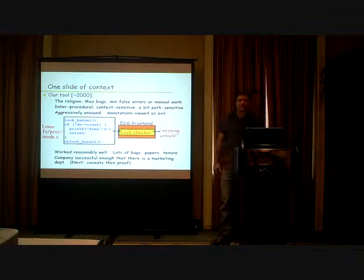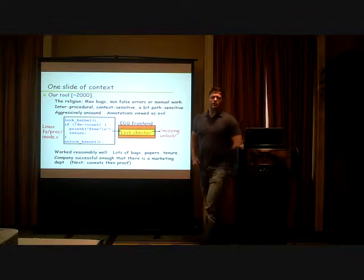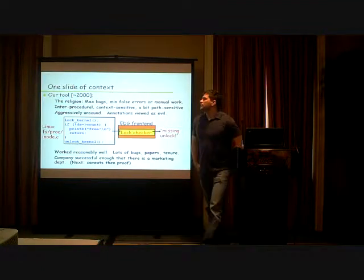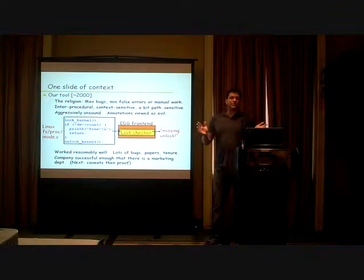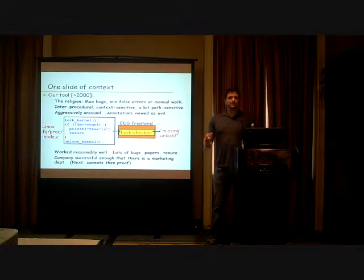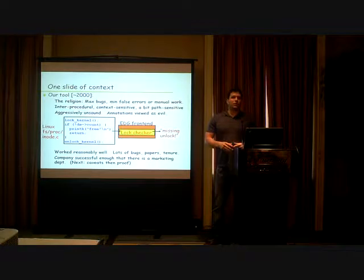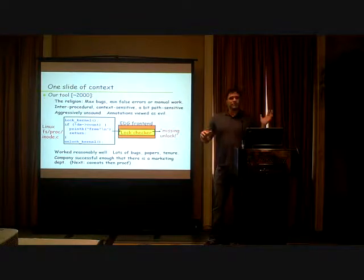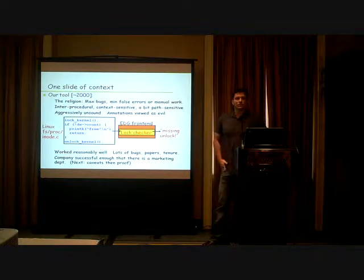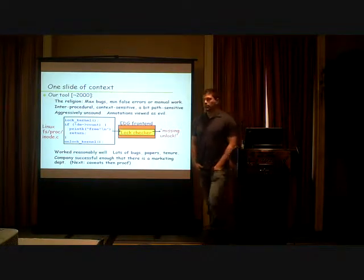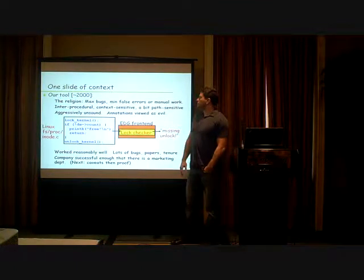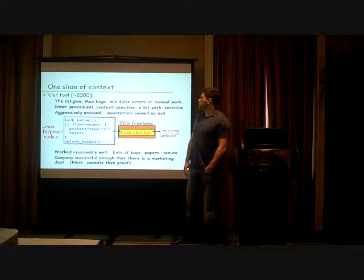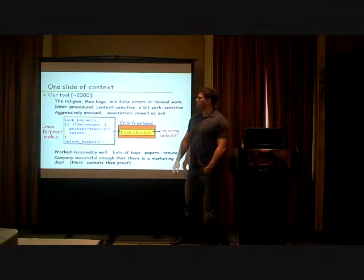I'll give one slide of context. We had a pretty straightforward bug-finding tool. The main religion is: as many bugs as possible, as little work as possible, as few false positives as possible. Our approach was to shove as much code through as you can, because 10 times more code means 10 times more bugs. The tool was inter-procedural, context-sensitive, and at the research level there was some path sensitivity.